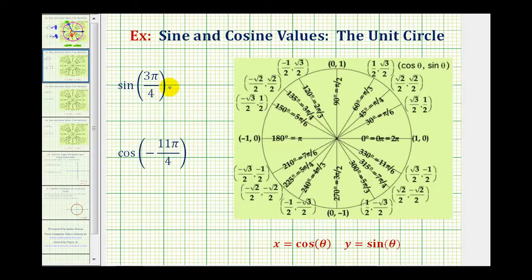We want to find the exact trig function values using the unit circle. The great thing about the unit circle is that if we sketch the angle in standard position, the point where the terminal side intersects the unit circle gives us both the cosine function value and the sine function value, where x equals cosine theta and y equals sine theta.